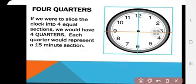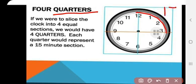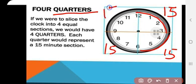The important part is our clock is divided into 4 quarters. Suppose it is a simple circle — we divide it into 4 equal quarters. Quarter meaning is 15. So every quarter we have 15 minutes. 15 times 4 makes our total 60 minutes.